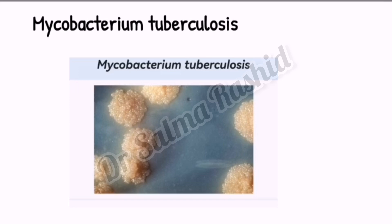Mycobacterium tuberculosis, also known as Koch's bacillus, is the causative agent of tuberculosis and was first discovered in 1882 by Robert Koch. Acid-fast stains such as Ziehl-Neelsen or fluorescent stains such as auramine are used to identify Mycobacterium tuberculosis under a microscope. Humans are the only known reservoir of Mycobacterium tuberculosis, and the major route of spread is through air droplets from a person who has the disease — through coughing, sneezing, speaking, or singing.